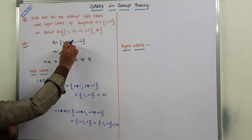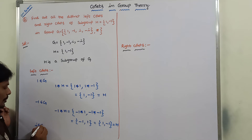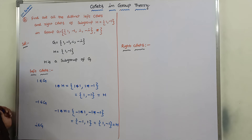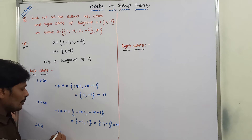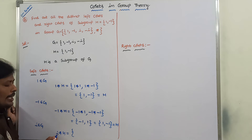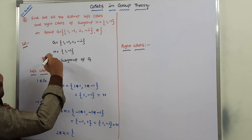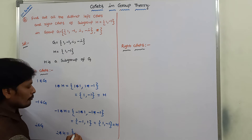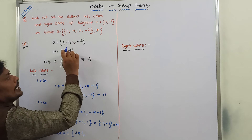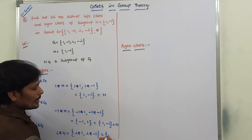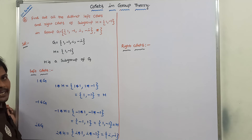Next, I am taking element i. So i belongs to G. Element i is combined with all the elements of H, and i exists on the left-hand side of H, forming the left coset. i · H = {i×1, i×(−1)} = {i, −i}.